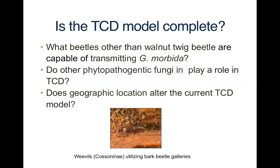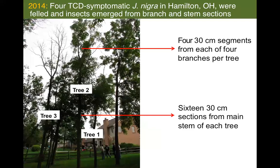The next study we undertook was to ask questions about what beetles other than walnut twig beetle are capable of transmitting Geosmithia morbida, what roles other phytopathogenic fungi might play in TCD, and also whether geographic location alters the current TCD model — because TCD seems to act differently in the west than in the native range of black walnut.